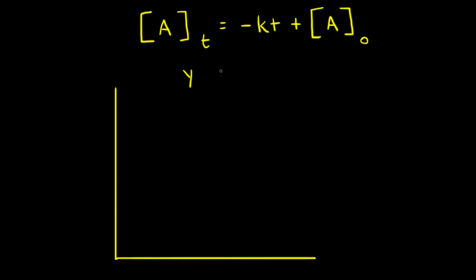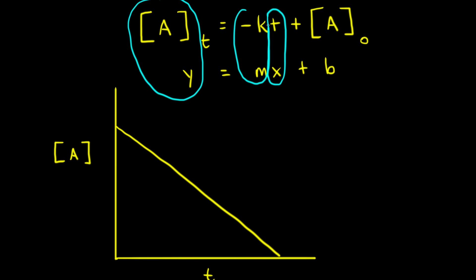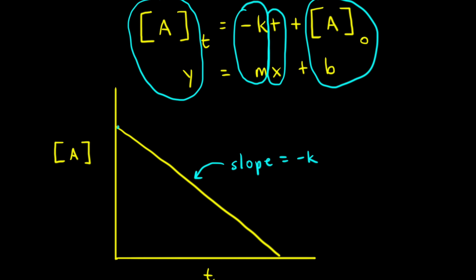Notice that the integrated rate law is in the form of Y = MX + B, which is the equation for a straight line. So if we graph the concentration of A on the Y axis and time on the X axis, we will get a straight line if the reaction is zero order. The slope of that line is equal to the negative of the rate constant K, and the Y intercept — where the line intersects with the Y axis — is the initial concentration of A.